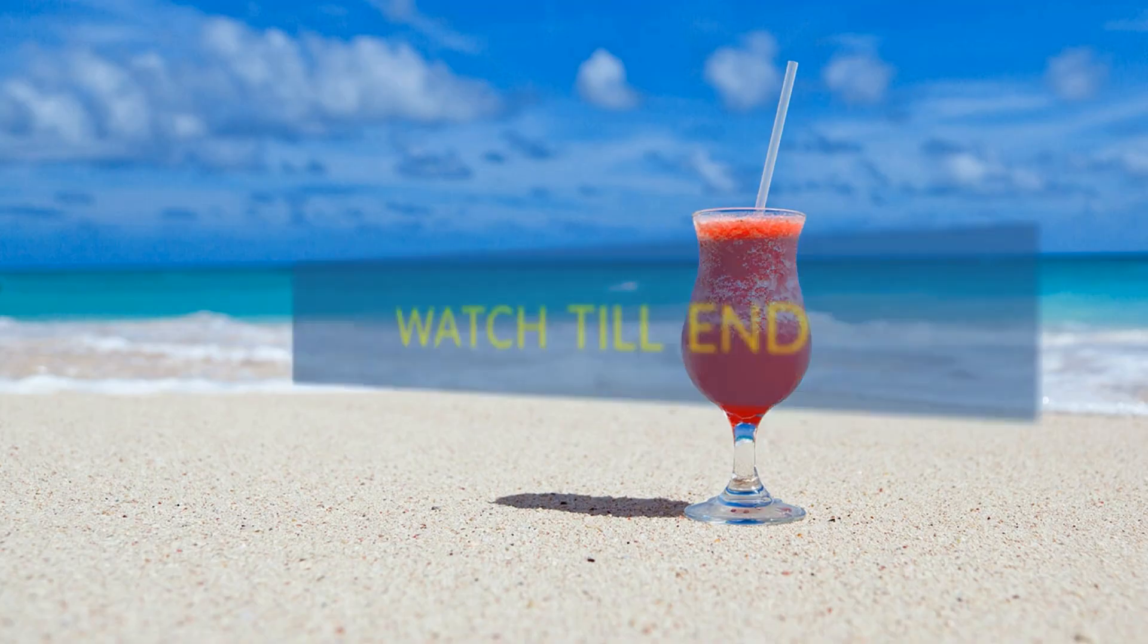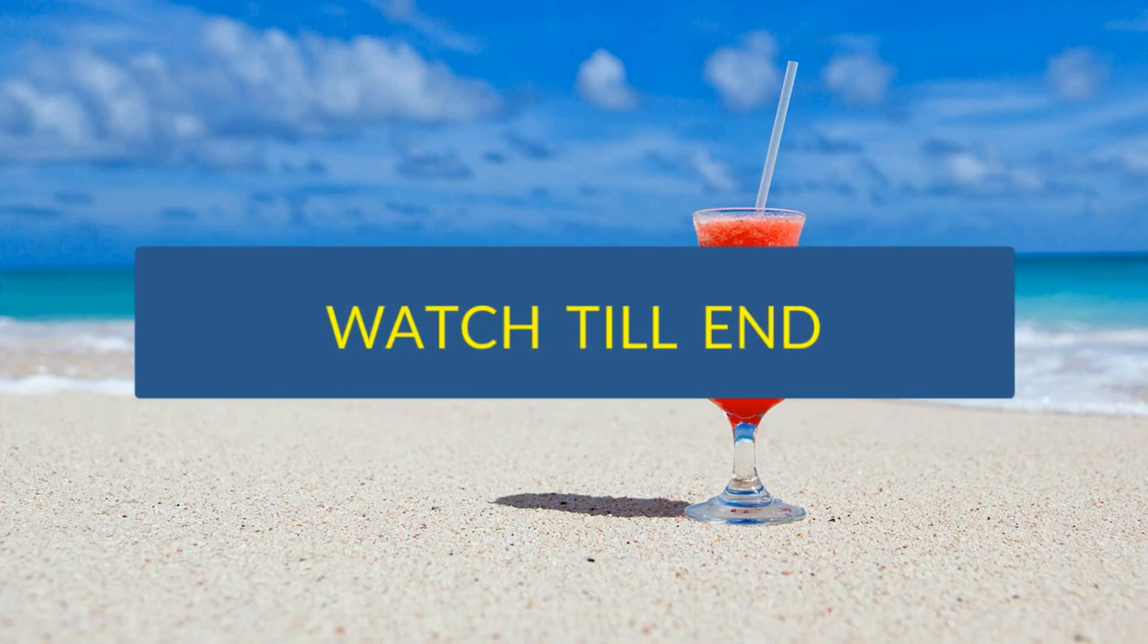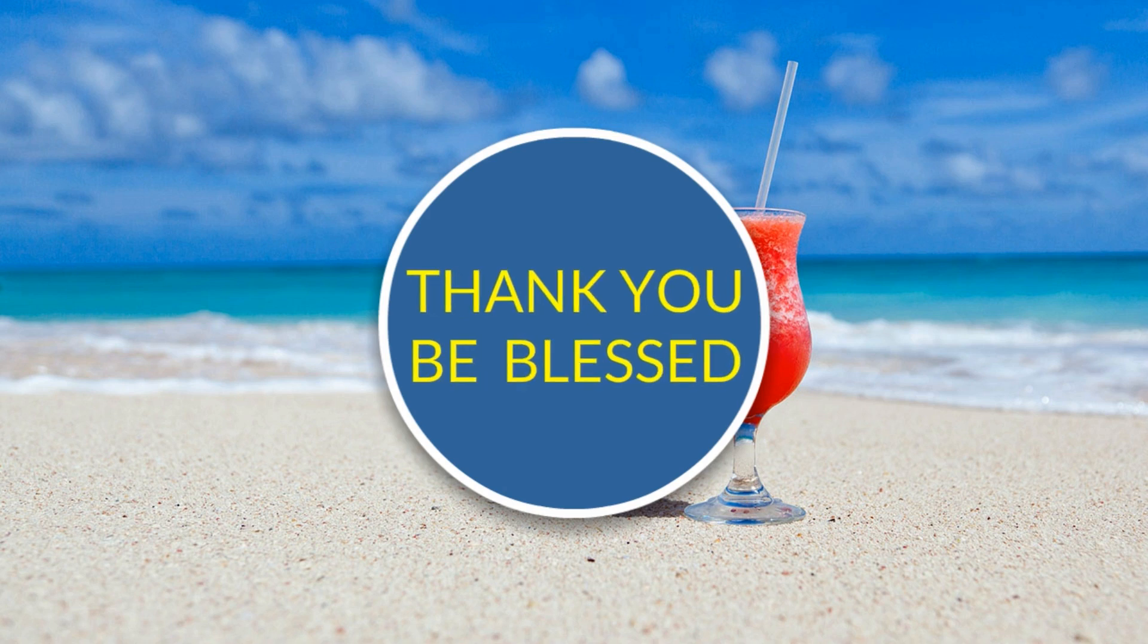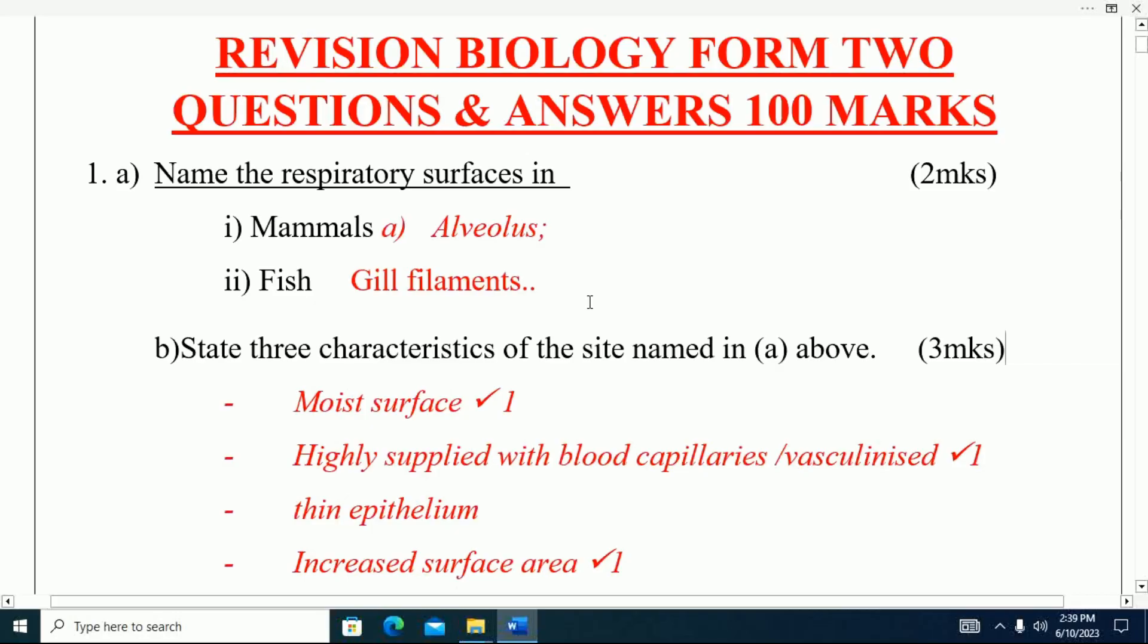To the subscribers, we really want to thank you guys for the support you have given us. Question number one: Name the respiratory surfaces in mammals and fish. Respiratory surfaces in mammals are alveoli. In fish they are called gill filaments. If you write gill only, you get it wrong.